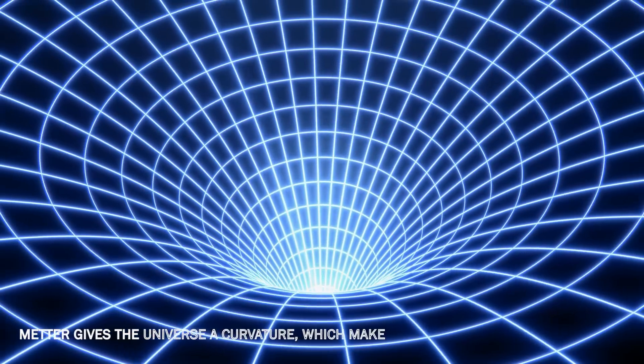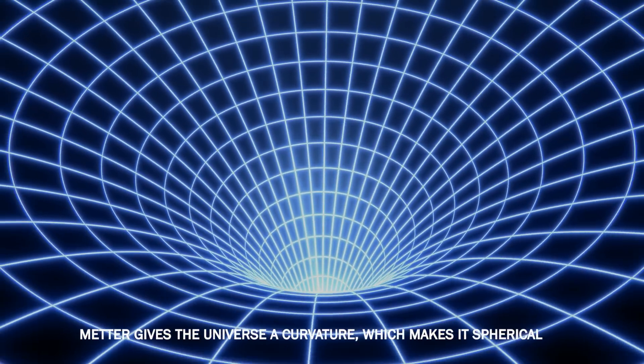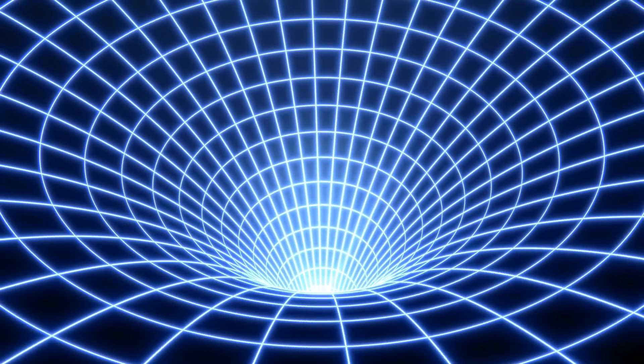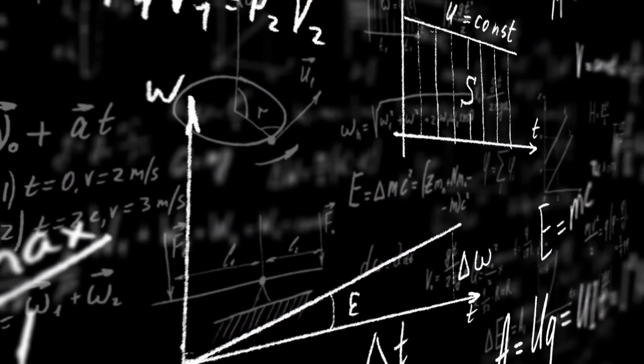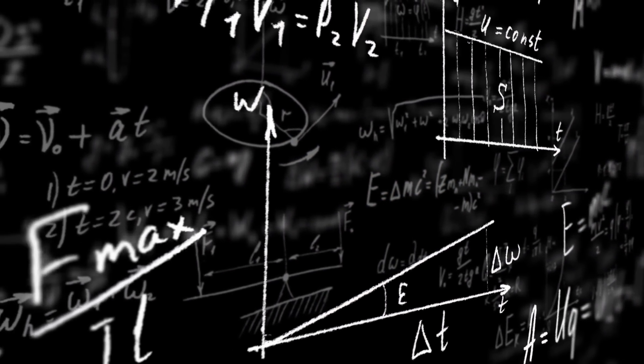Einstein was giving us a new way of seeing the universe. Matter gives the universe a curvature, which makes it spherical, and the amount of mass, and therefore luminous objects, in it doesn't need to be infinite anymore. This is a nice way to solve Olbers' paradox.